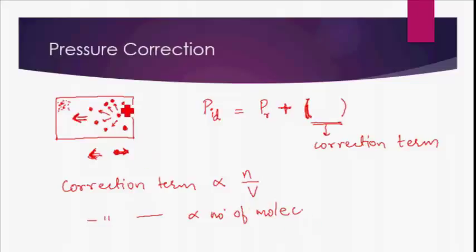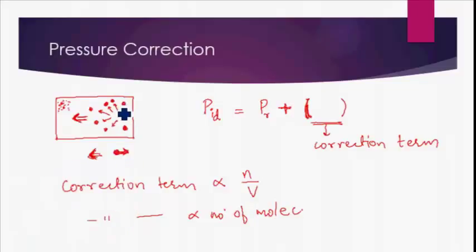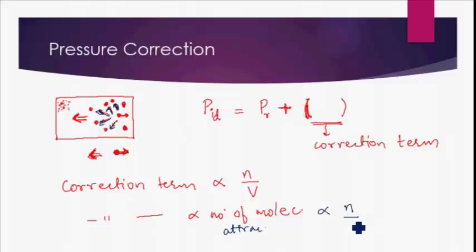The correction term also depends on how many molecules are trying to pull the colliding particle backwards — greater the number of molecules pulling it backward, greater will be the correction term. So the correction term is also directly proportional to the number of molecules attracting the colliding molecule, which again depends on the density of molecules. The number of molecules attracting the colliding particle depends on how many molecules are present per unit volume — so it again depends on n/v.